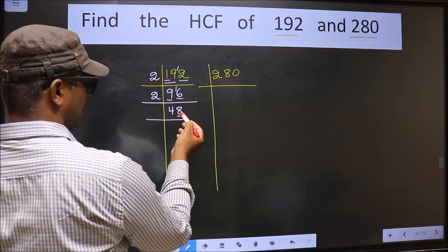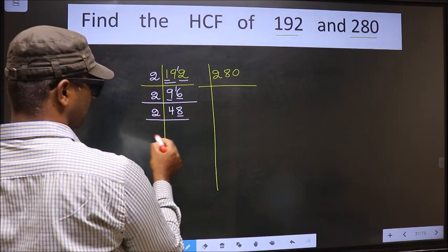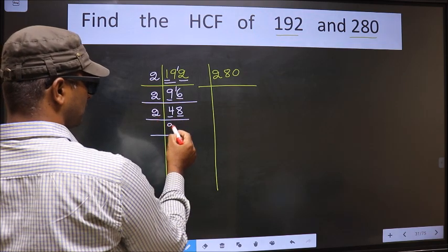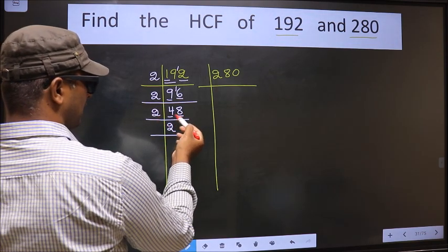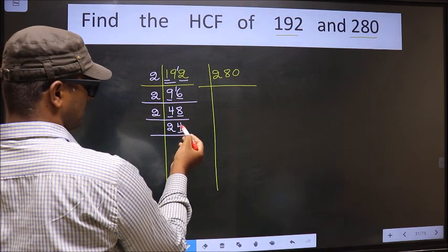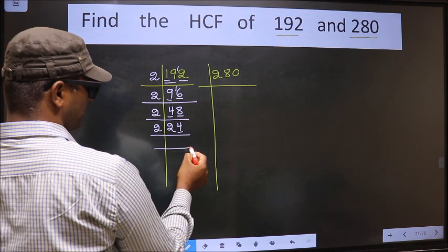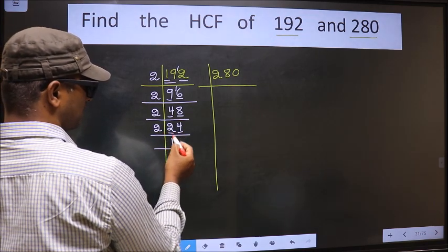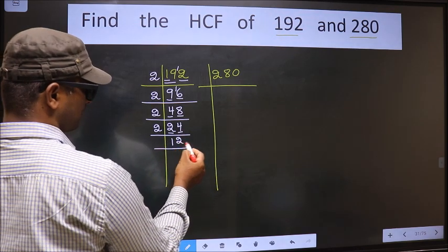For this number, last digit 8, even, so we take 2 here. The first number is 4; when do we get 4 in the 2 table? 2 times 2 is 4. The other number 8: when do we get 8 in the 2 table? 2 times 4 is 8. For this number, last digit 4, even, so we take 2 here. The first number 2: when do we get 2 in the 2 table? 2 times 1 is 2. The other number 4: when do we get 4 in the 2 table? 2 times 2 is 4.